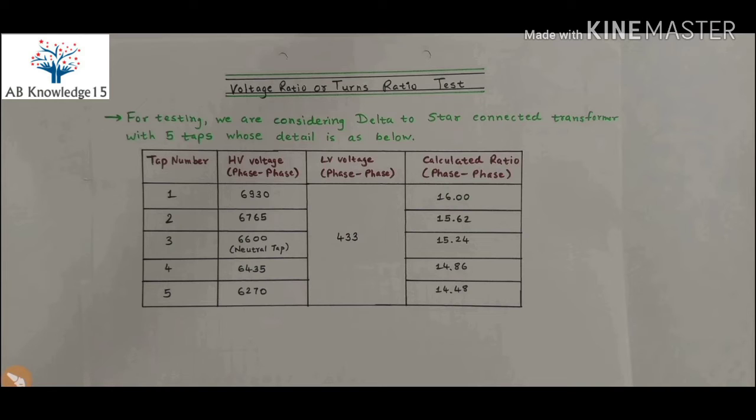For understanding the testing, we are considering delta to star connected transformer with five taps whose details are as below. Here is the transformer with five number of total tappings, and HV side voltages are from 6930 volts to 6270 volts up to five taps. The calculated ratio as per the formula of voltage ratio is from 16.00 to 14.48 from tap number one to five.